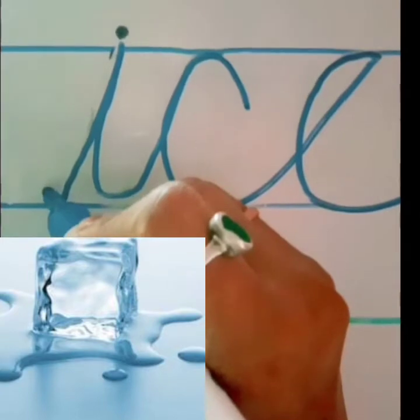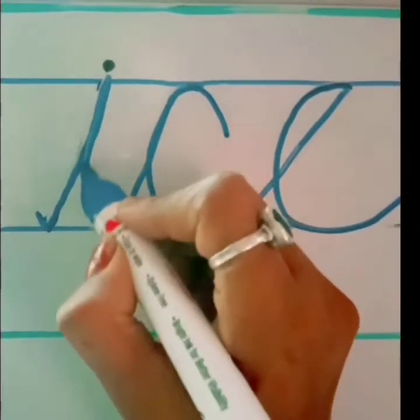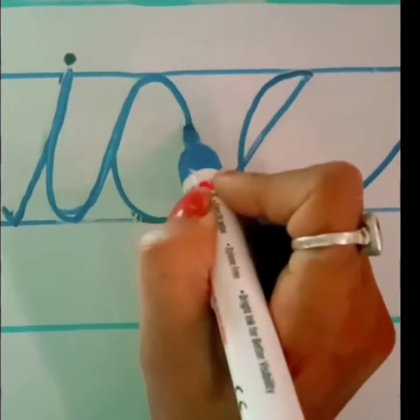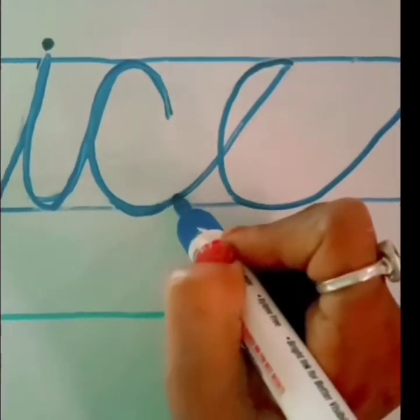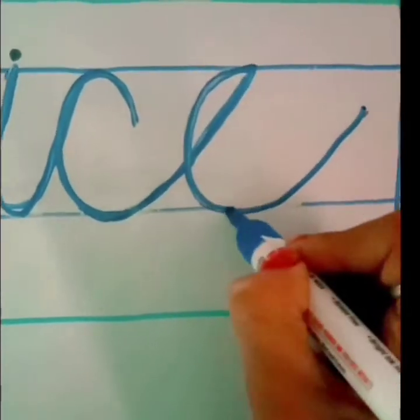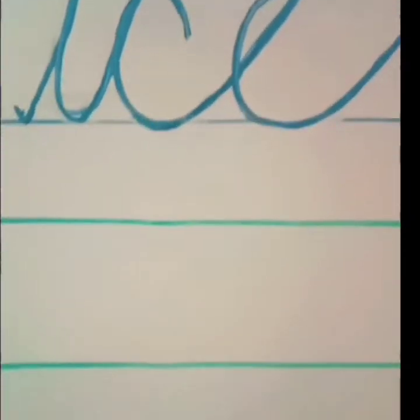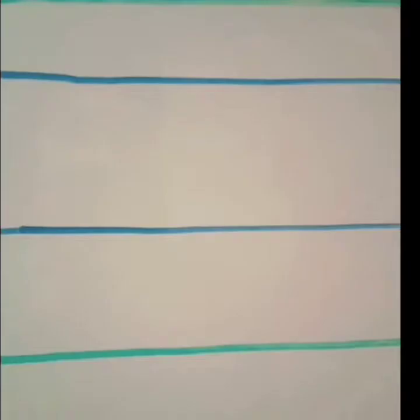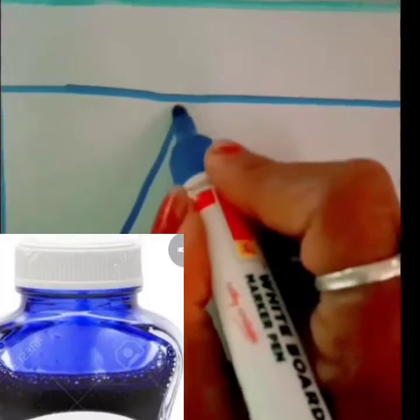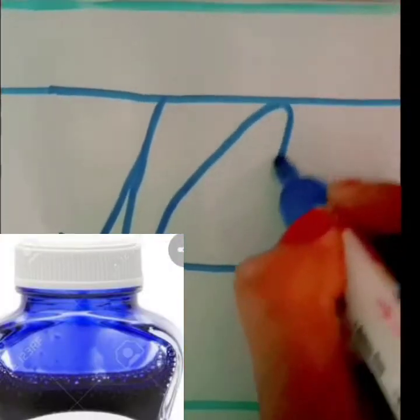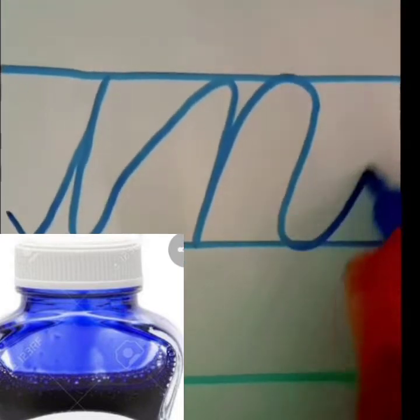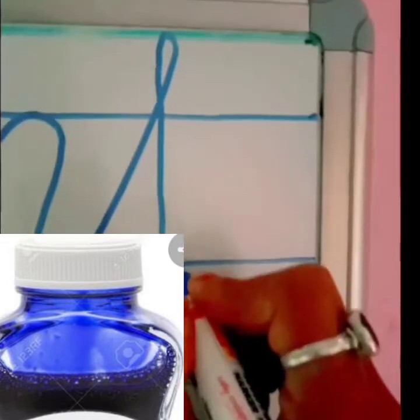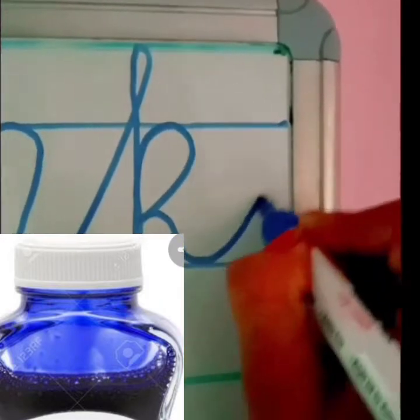Let's start with the alphabet I. I for ice cream. I, C, E, ice. I for also ink. I, N, K, ink.